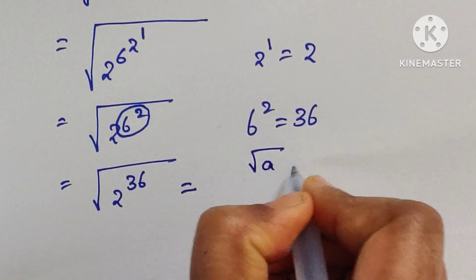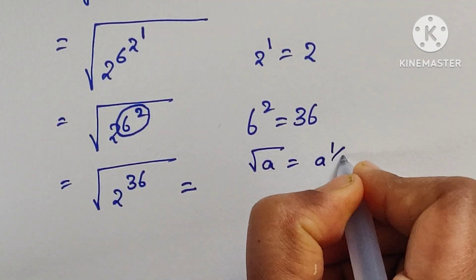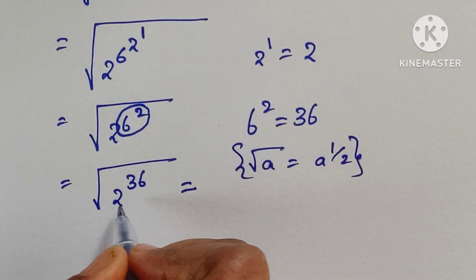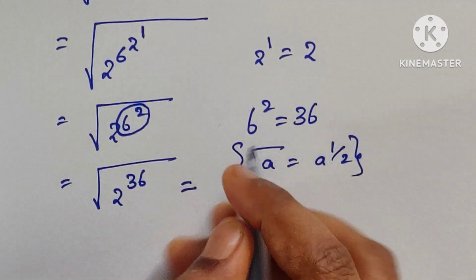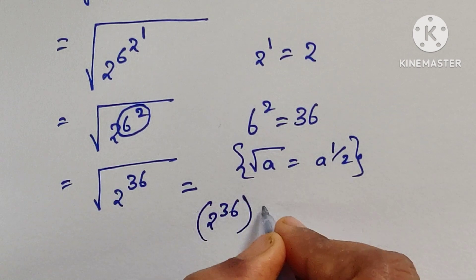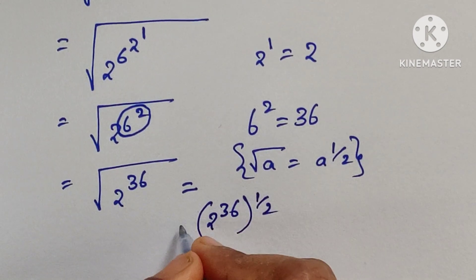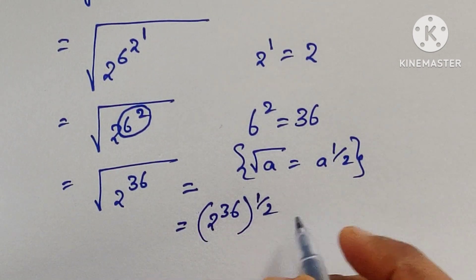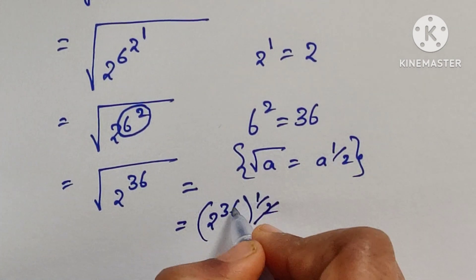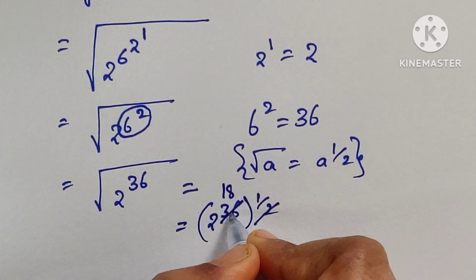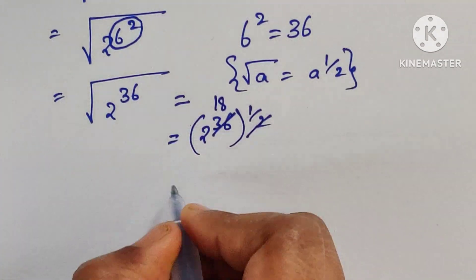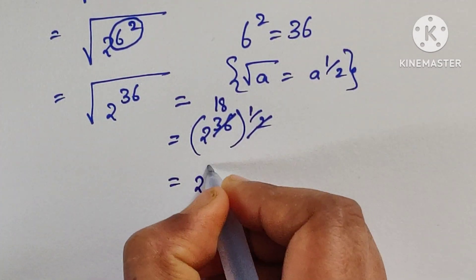Here, 6 squared equals 36. We know that the square root of a equals a to the power of 1/2. Using this formula, we can write 2 to the power of 36, to the power of 1/2.